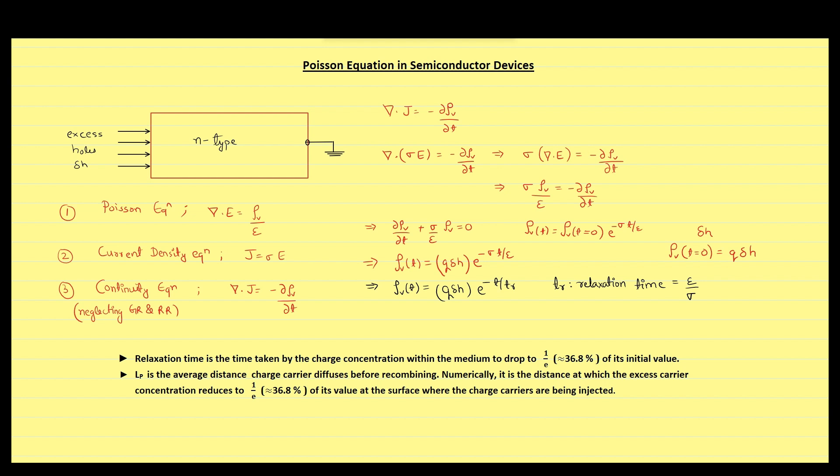The definition is quite similar to diffusion length but not exactly the same. Diffusion length is the average distance charge carrier diffuses before recombining. However, numerically, it is the distance at which the excess carrier concentration reduces to 1 upon e times of its value at the surface where the charge carriers are being injected.